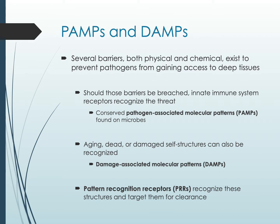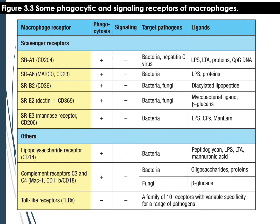Scavenger receptors (SR) are one family of pattern recognition receptors found on macrophages. They detect different types of pathogens and molecular patterns, and when they bind their ligand, they signal for phagocytosis. A common ligand is LPS, which is very unique to bacteria — especially gram-negative bacteria, which tend to be more pathogenic. Gram-positive bacteria tend to be more beneficial, though not always. Being able to detect LPS is critically important for preventing infections.